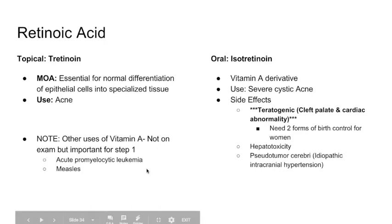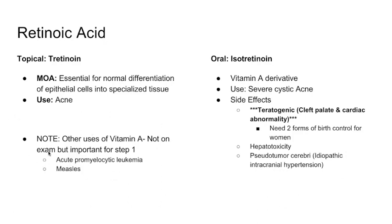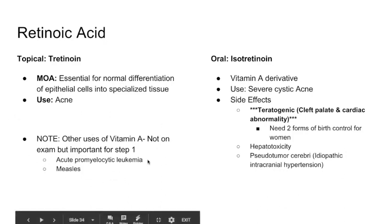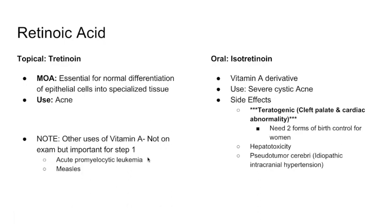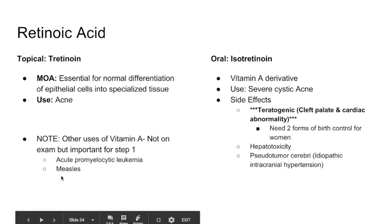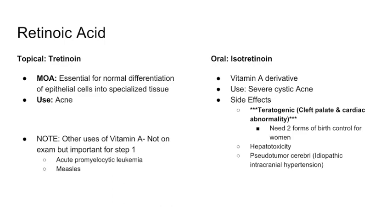Additional notes on vitamin A — not on your pharm exam but very important for Step 1: vitamin A is used for acute promyelocytic leukemia and also for measles. The same idea applies — it helps differentiation of cells into specialized tissue.